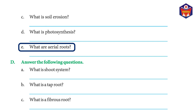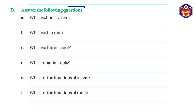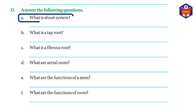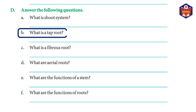Exercise C continued. (e) What are aerial roots? Answer: Big trees like banyan have numerous roots that grow downward from the branches — they are called aerial roots. Exercise D — (a) What is the shoot system? Answer: The shoot system includes all those parts of a plant that grow above the ground.